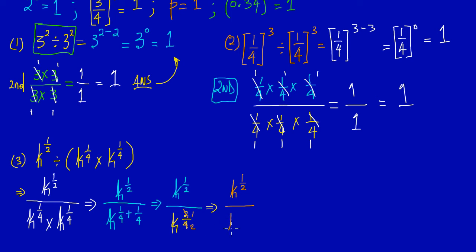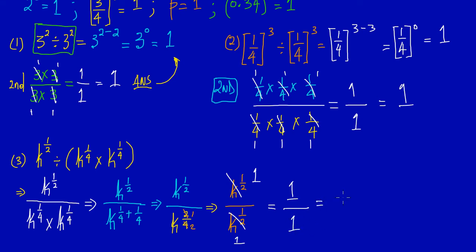Since K to the half in the numerator and K to the half in the denominator cancel, we get one upon one, which equals one. That's the power to zero rule confirmed once more. See you in the next video where we'll look at the inverse rule.